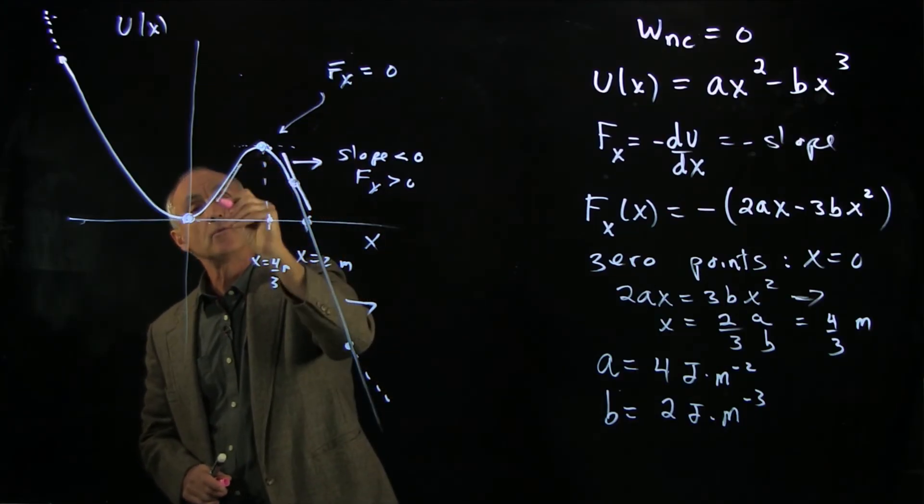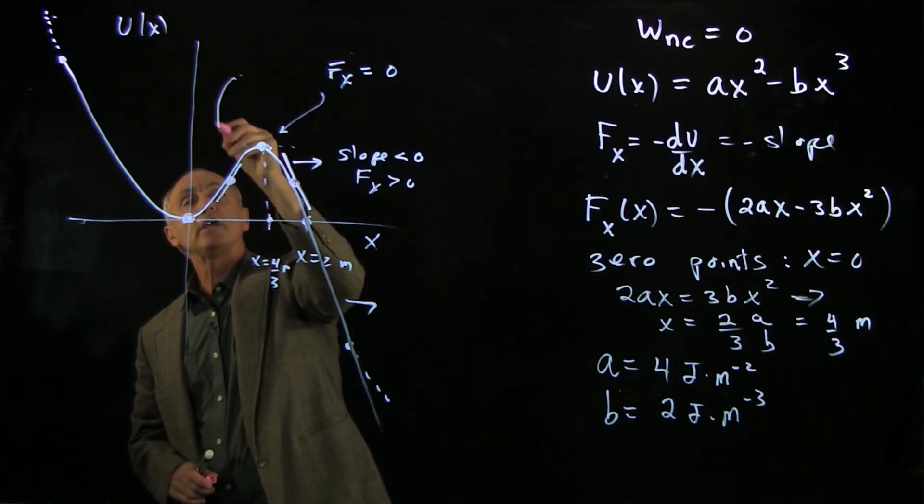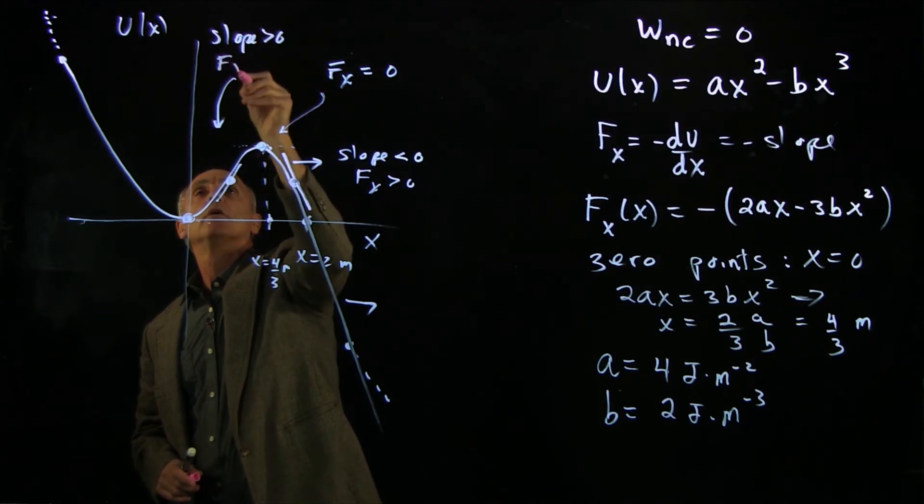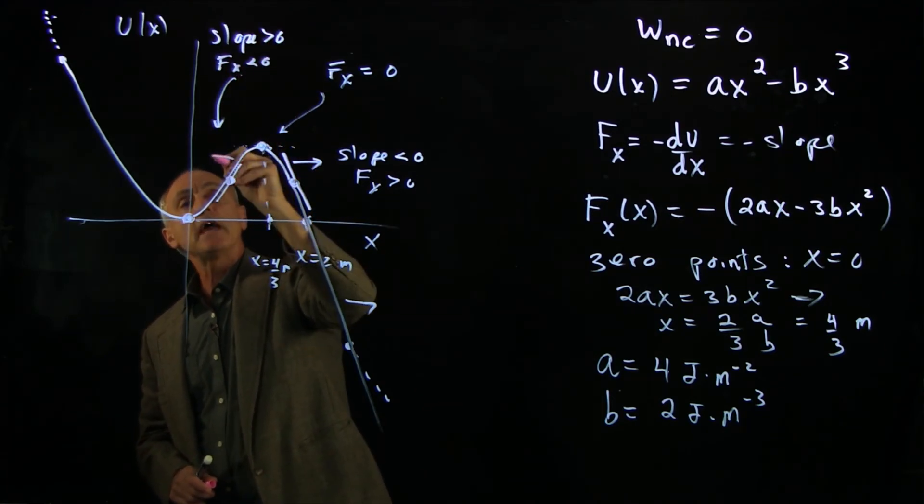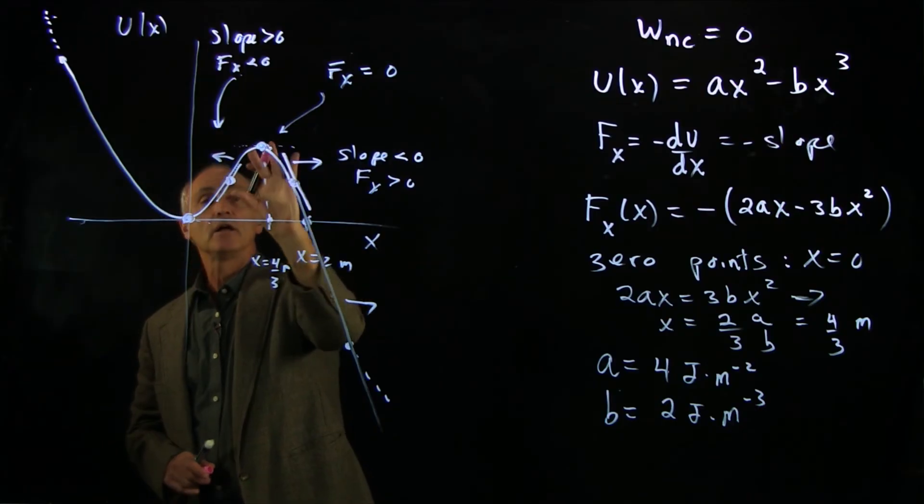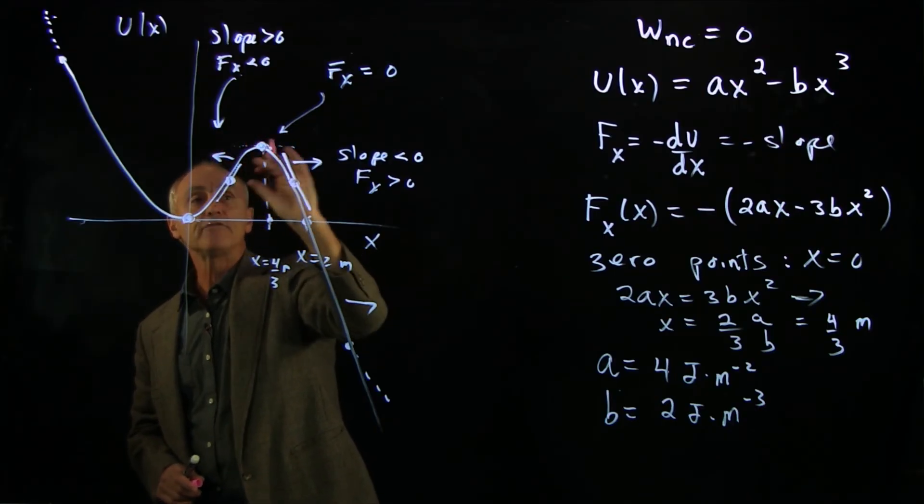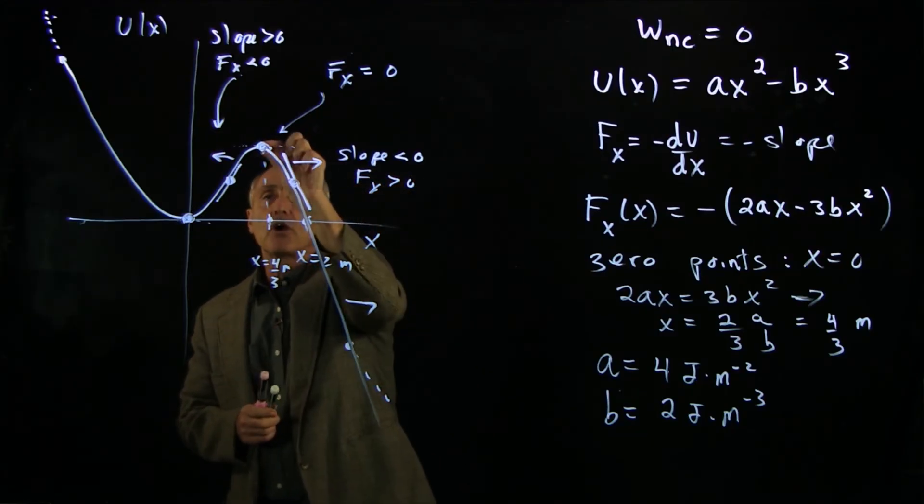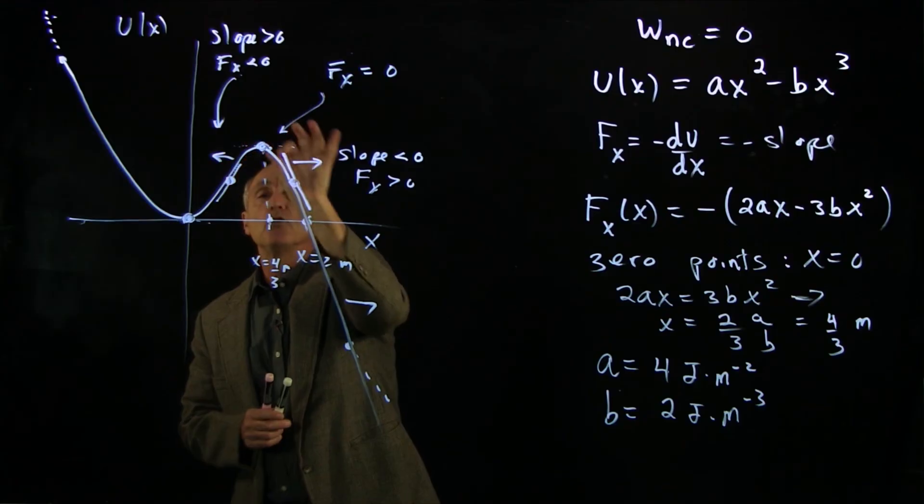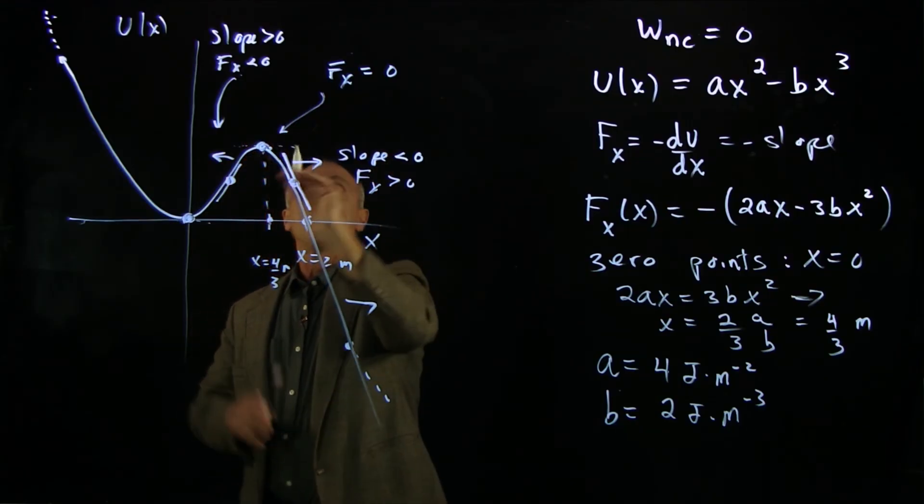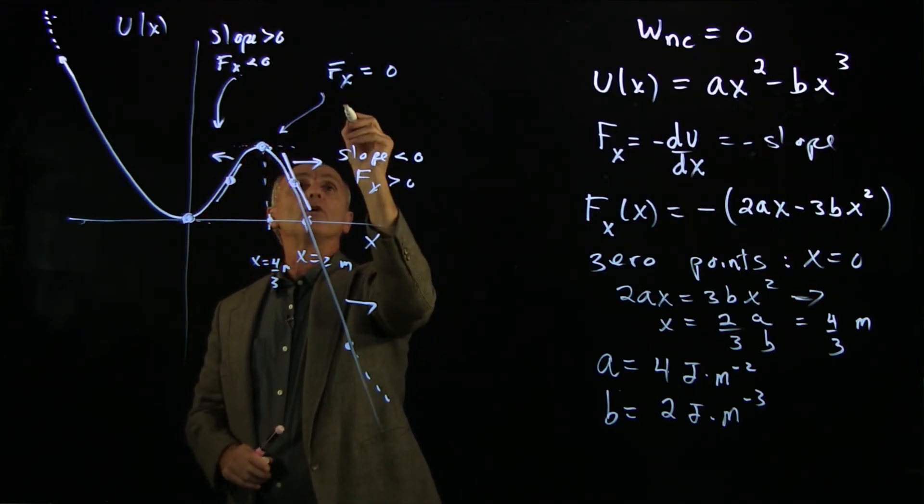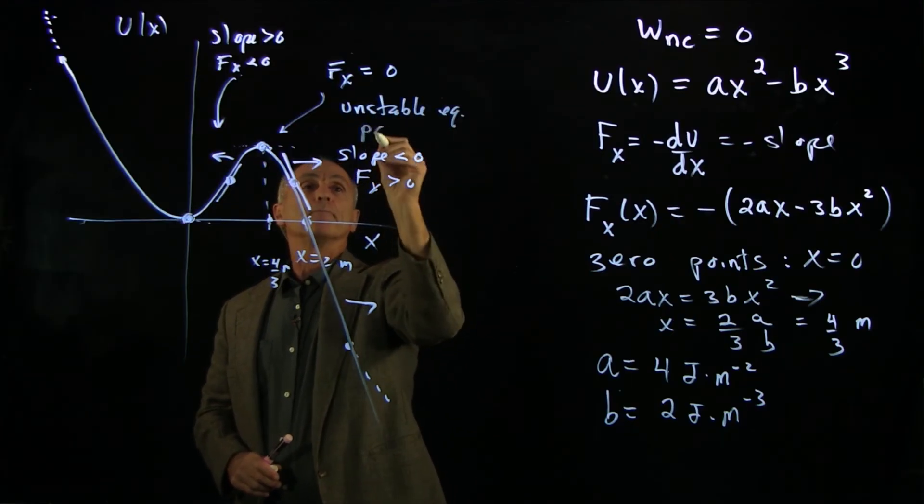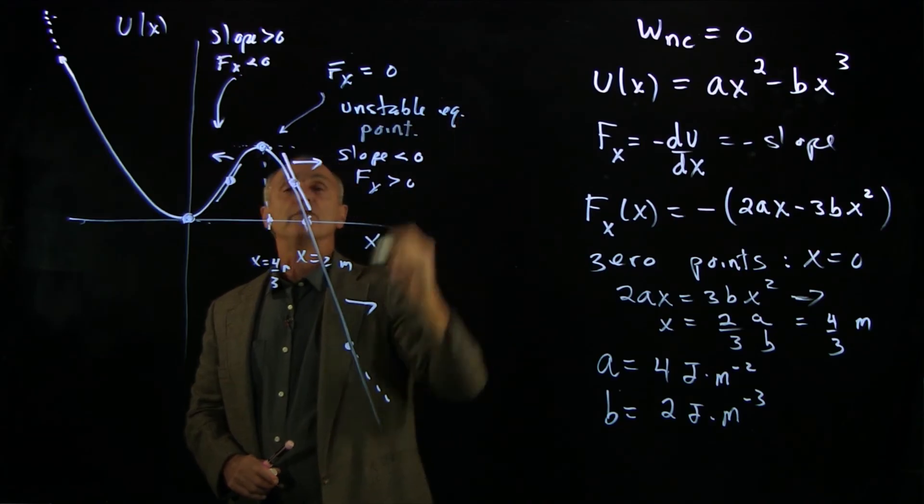On the other side, we do the same type of argument. Over here, the slope is positive, but the force is negative. So again, on this side, the particle will move away from this zero point. If our particle just started there with a little bit of kinetic energy, it would move one way or the other away from that point. We call this an unstable equilibrium point.